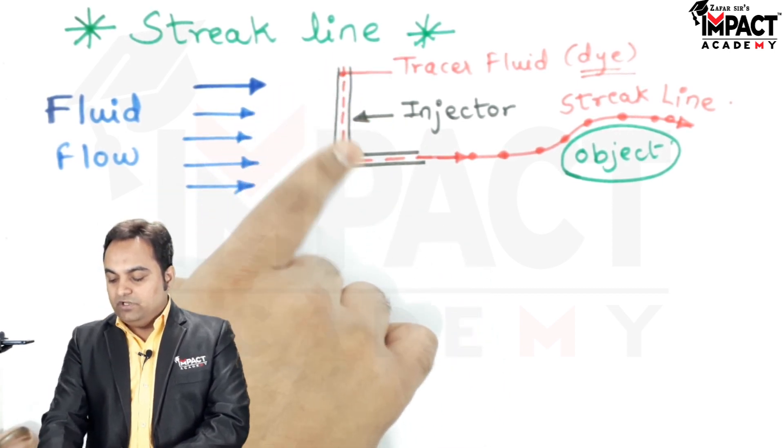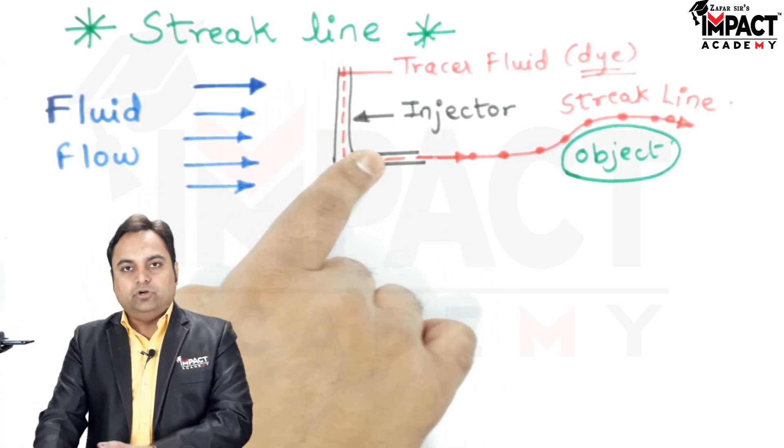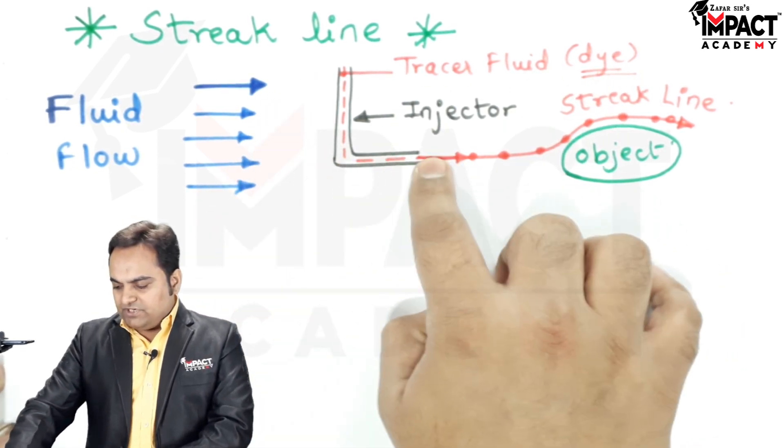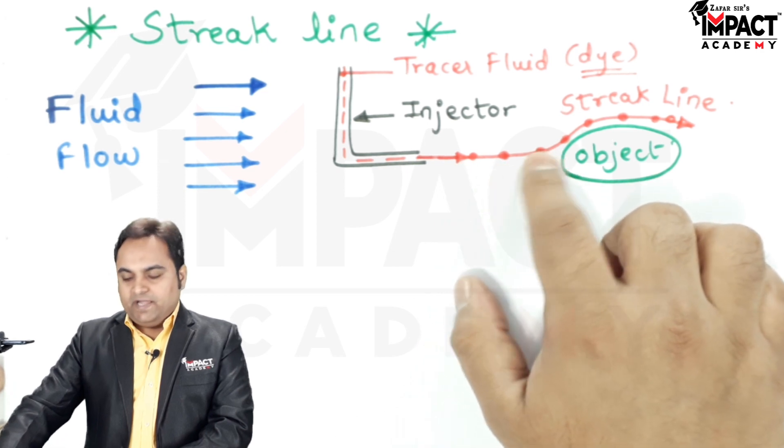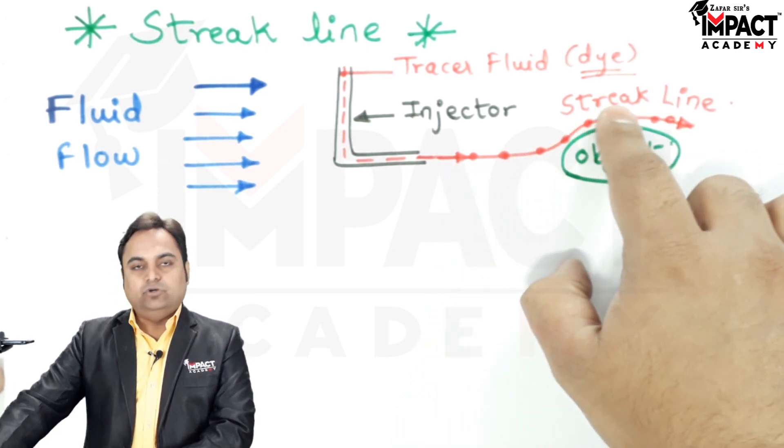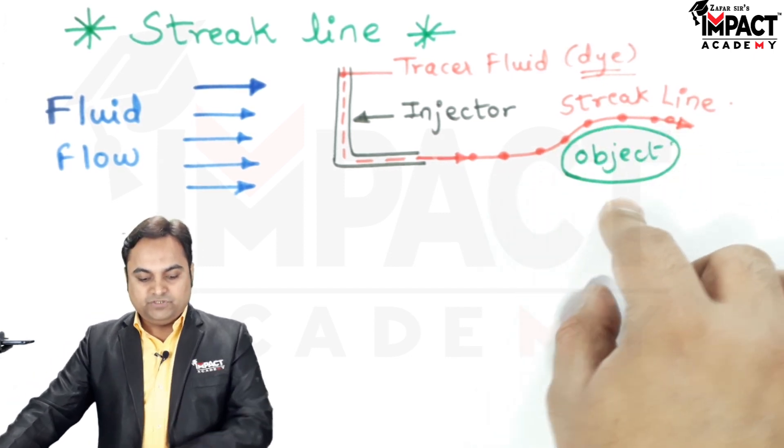there would be a tracer fluid called the dye, colored dye. And when it passes through the injector nozzle, there are various points, and the curve we get by joining all these points is called the streak line, and it is going to follow this object.